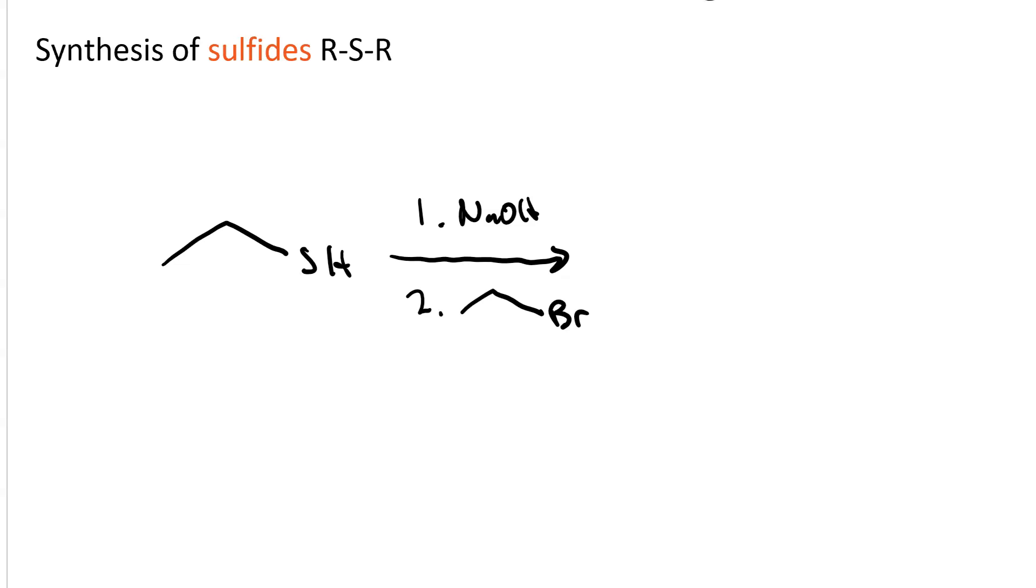You can make a sulfide by reacting a thiol, first with sodium hydroxide to deprotonate it, and then with an alkyl halide. In this case, we're going to make ethyl ethyl sulfide. Just like diethyl ether, but with a sulfur instead of an oxygen bridging.